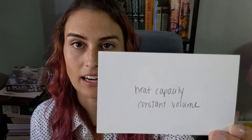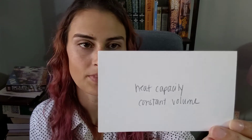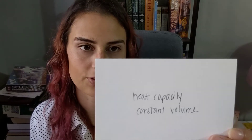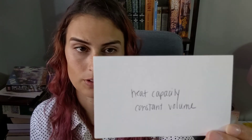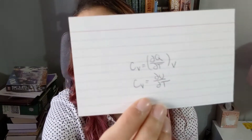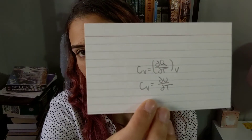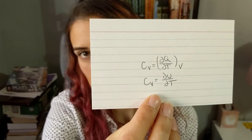The heat capacity at constant volume, C sub V, is equal to the partial derivative of Q with respect to T at constant volume, which is also the partial derivative of U with respect to T.